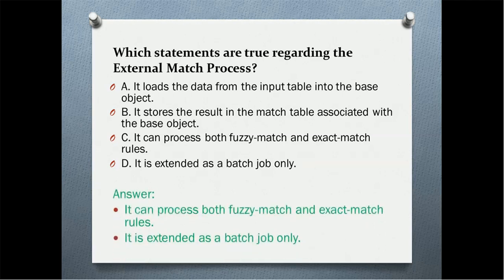The correct answers are: it can process both fuzzy match and exact match rules, and it is executed as a batch job only. The option 'it loads data from the input table into the base object' is not correct — it is a match job, so there is no loading. Also, the base object match table is used for the regular match process, not the external match process. The external match process has its own specific output match table where results are stored.